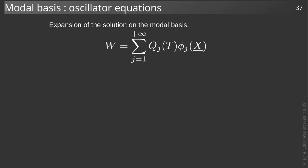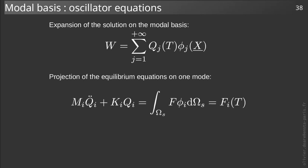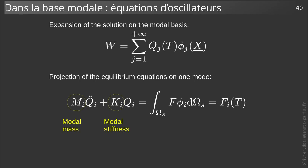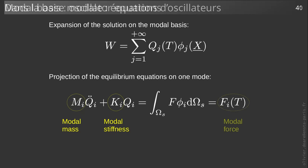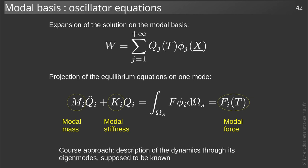The projection of the equilibrium equation onto an eigenmode i then gives a forced oscillator equation where the mass and stiffness are respectively the modal mass and stiffness of the mode under consideration, and the modal force is the projection of the force onto that mode. Most of the time in this course, we will describe the dynamics of the solid according to the second modes, which will be assumed to be already known.